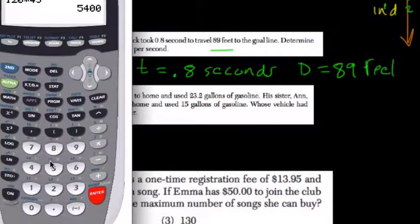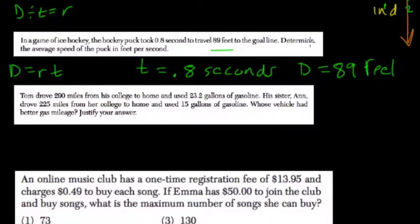So we have 89 divided by 0.8 seconds, 111.25 feet per second.